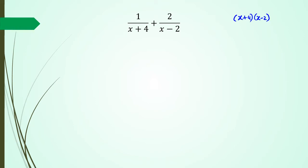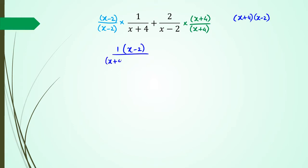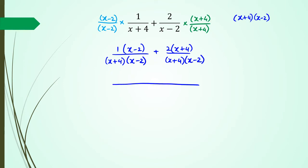This particular question is fairly straightforward. I'm going to multiply the left-hand side fraction by x minus 2 in both the numerator and denominator. And for the right-hand side fraction, I'm going to multiply by x plus 4 in both the numerator and denominator. So I end up with 1 times x minus 2 divided by (x plus 4)(x minus 2), plus 2 times x plus 4 divided by (x plus 4)(x minus 2). I'll just write the denominators as one combined fraction: (x plus 4)(x minus 2).